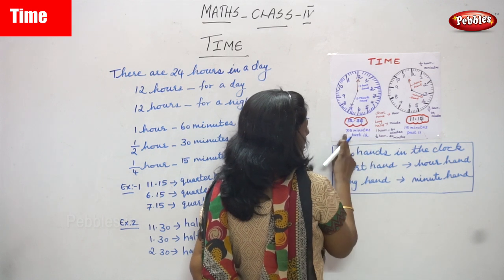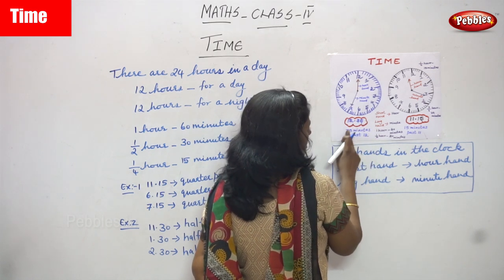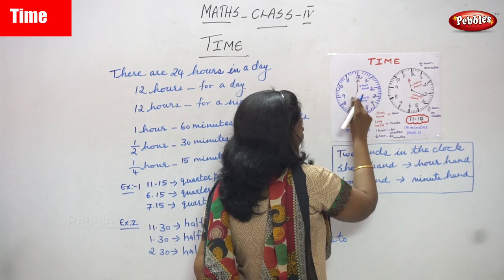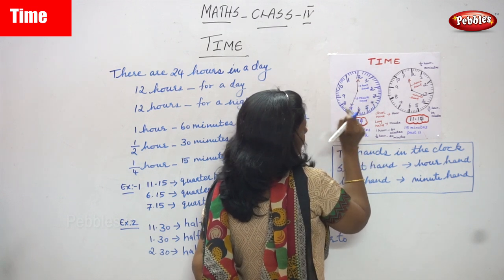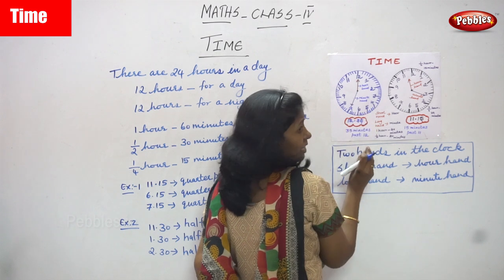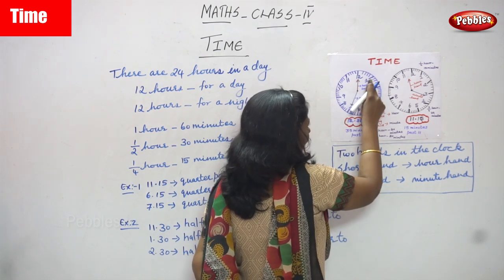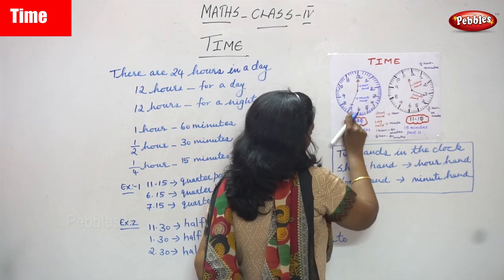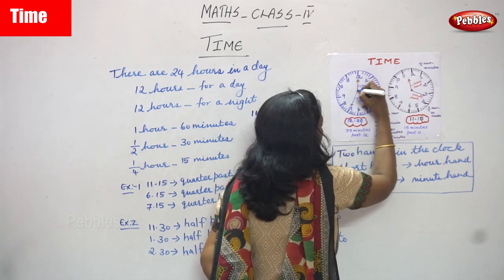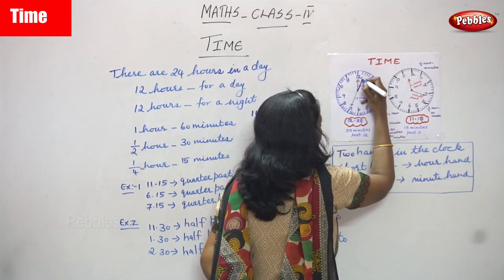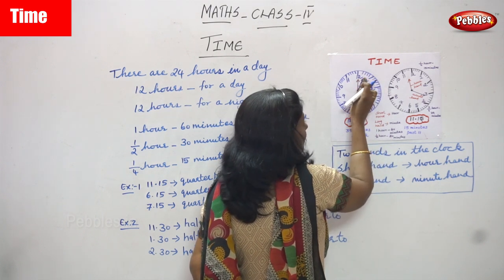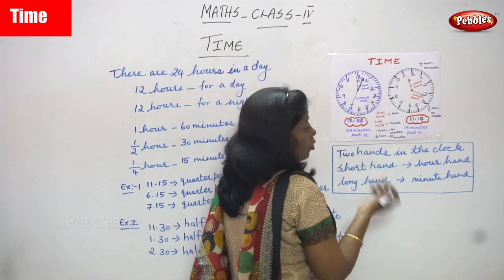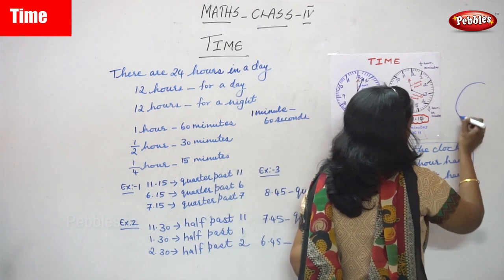We are going to see 12:35, that means 35 minutes past 12. The short hand is pointed to 12 and this long hand is pointed to 7. Each number represents 5 minutes, so 1 is 5, 2 is 10, 3 is 15, 4 is 20, 5 is 25, 6 is 30, 7 is 35 — so the time is 12:35. You can also draw the clock like this, with the short hand coming between 12 and 1.